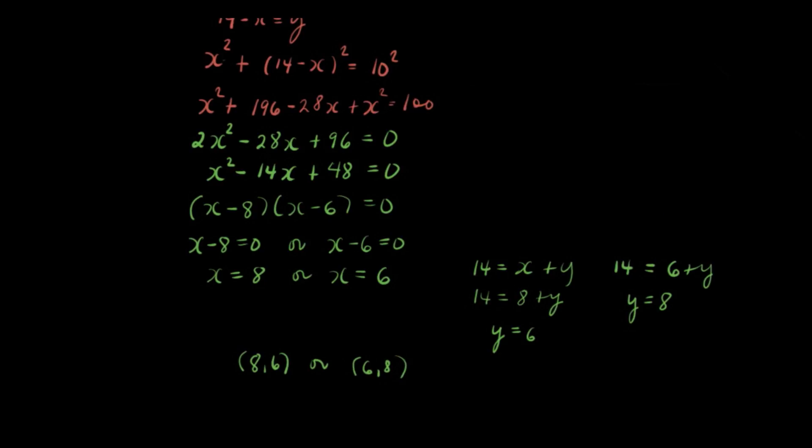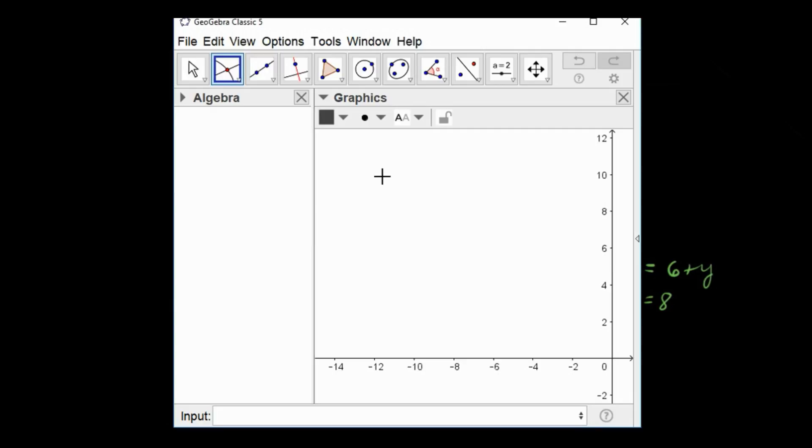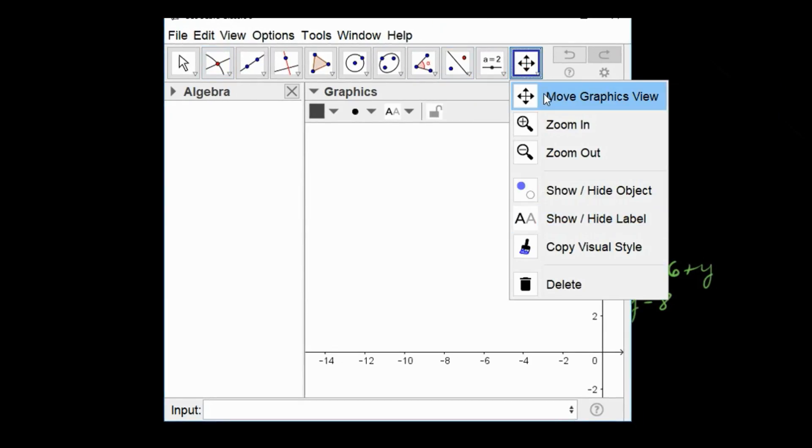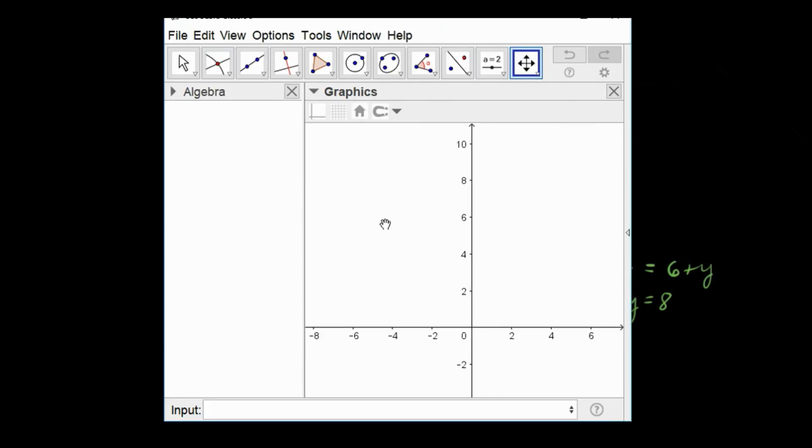So let's use GeoGebra to verify our solution. I'm going to type in the equation. So we have x squared plus y squared is equal to 100.